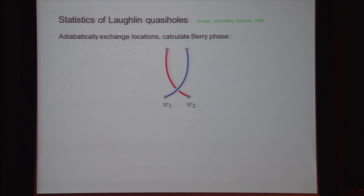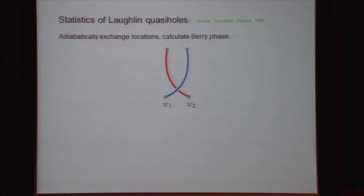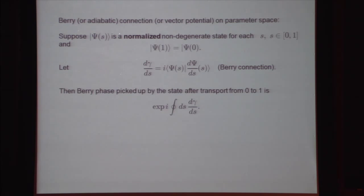The missing thing I haven't done is talk about calculating statistics — I haven't done the grading yet. I'm going to explain how this is calculated directly from wave functions in the case of the Laughlin states, done by Arovas, Schrieffer, and Wilczek. What I want to do is exchange two of these quasi-holes along a path in the counter-clockwise direction. First, some definitions for how to calculate Berry phase on a parameter space.